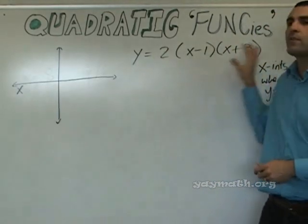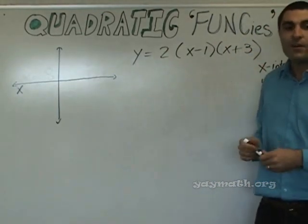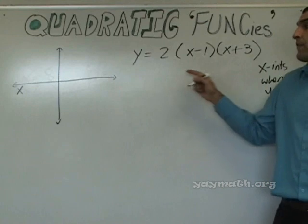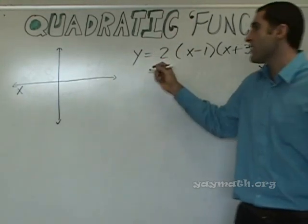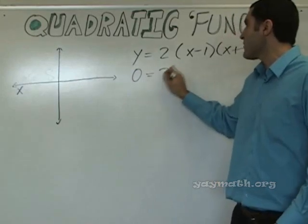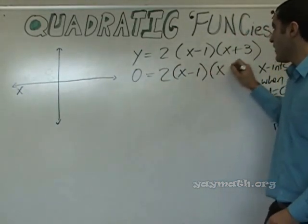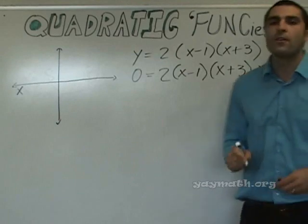How can we change this equation up? If I wanted to find the x-intercepts, what would I do? Make y is 0. So, let's rewrite that. 0 equals 2, x minus 1, x plus 3. Okay.